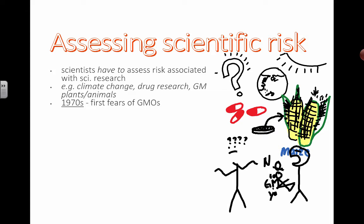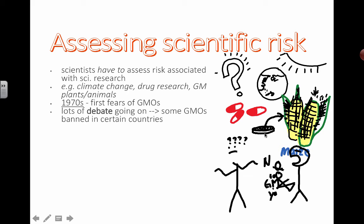So you really have to look at the entire gamut of possibilities. For GMOs — in the 1970s, the first fears of genetically modified organisms came about. Lots of debate going on. GMOs are banned in certain countries, they're allowed in certain countries. Chances are you've probably consumed food that has been genetically modified. The production of human insulin as a medicinal treatment for diabetics has often come as a result of genetically modified bacteria producing that insulin.